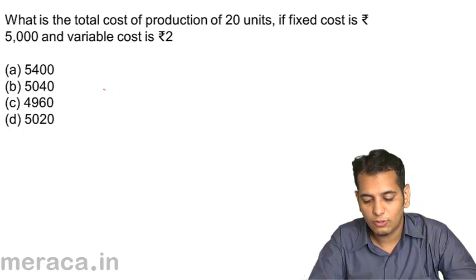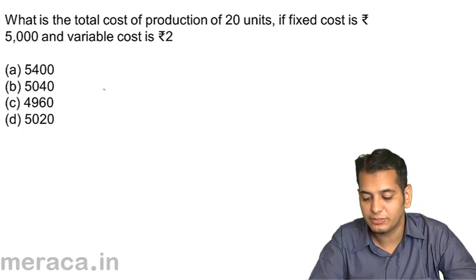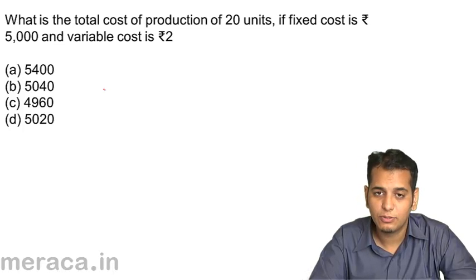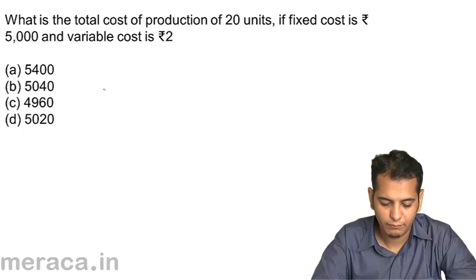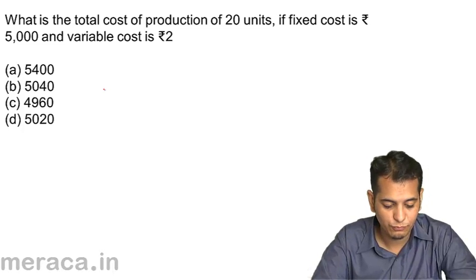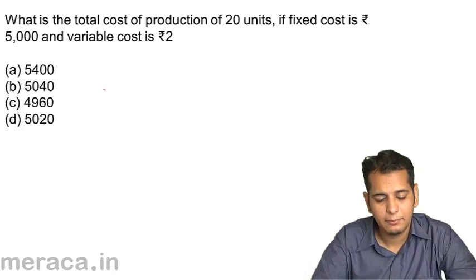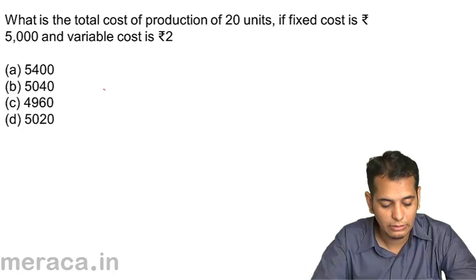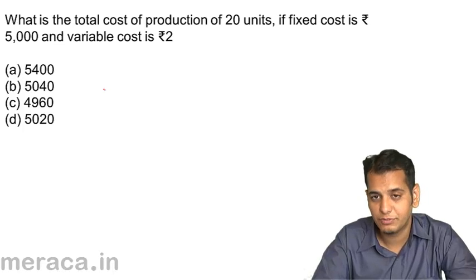What is the total cost of production of 20 units if fixed cost is Rs. 5000 and variable cost is Rs. 2 per unit? A. 5400. B. 5040. C. 4960. D. 5020.